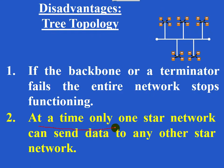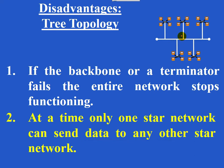At a time, only one star network can send data to any other star network. Only one central cable is there, and data has to travel through the central cable. Hence, only one star network can send data to any other star network at a time.